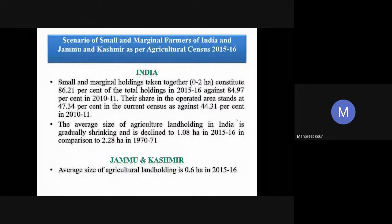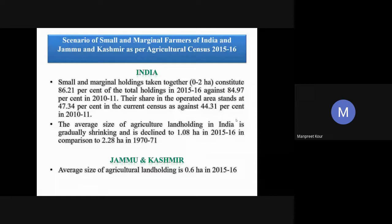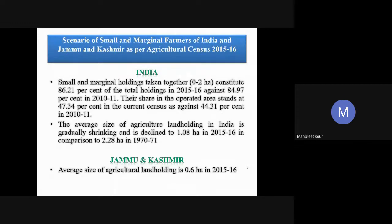Moving toward the introductory slide: in India, the majority of farmers are small and marginal, having holdings under two hectares, and their population is increasing — it has reached more than 86%. In the 2010–11 survey it was 84%, and in the 2015–16 survey it had increased further. The operational holding size is also decreasing due to fragmentation caused by population explosion.